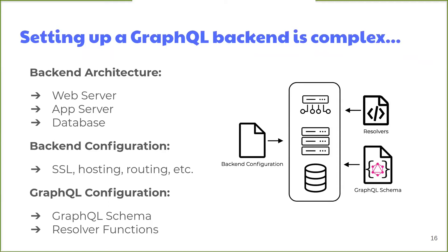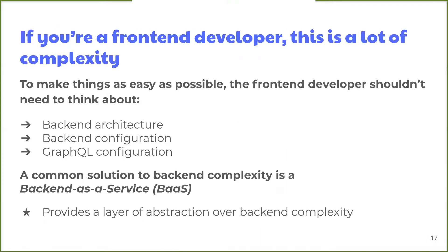The last few slides gave a big picture overview of what goes into making a GraphQL API, but to make a fully functioning GraphQL back-end, there's still a lot that needs to be done — you also need the standard components and configuration that would go into a generic back-end. If you're a front-end developer who wants to get a GraphQL-based application up and running quickly, you probably wouldn't want to worry about back-end architecture, the configuration of standard back-end features, or low-level GraphQL configuration like writing resolver functions. A common way to deal with this complexity is to use a back-end as a service, which means you can focus on the front-end and not worry too much about the details of how your back-end is built.